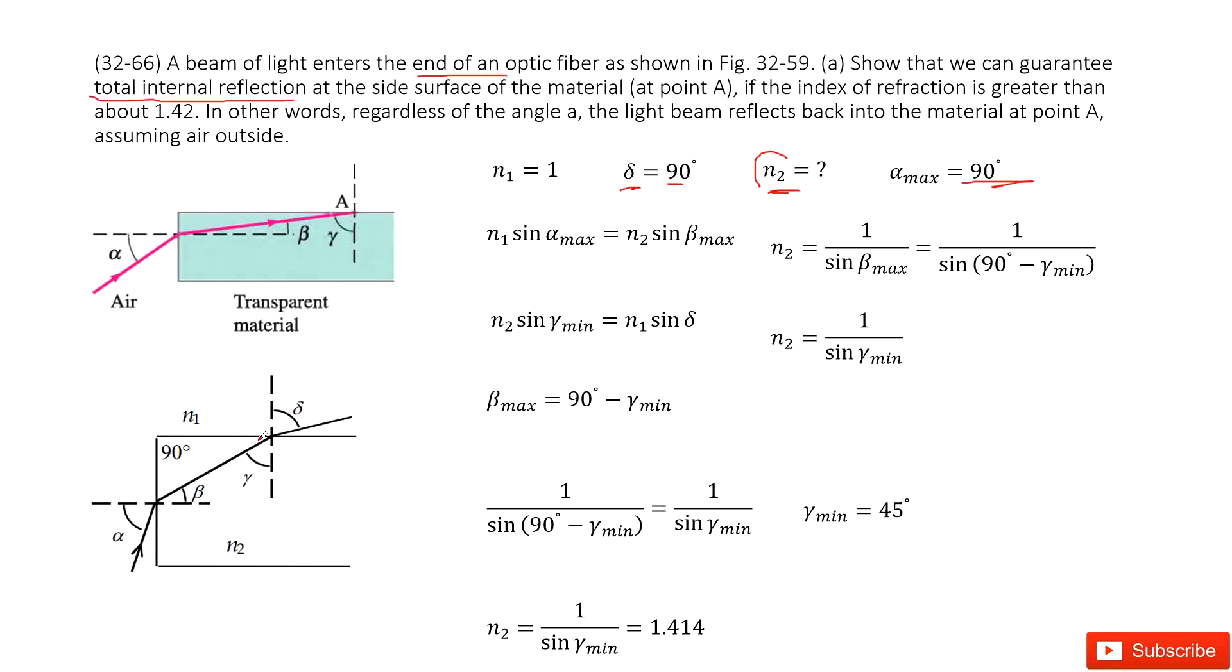So we look at this system. At this surface, the incident with n1 sin(alpha_max) equals n2 sin(beta_max). And at this surface, we can see n2 sin(gamma_min) equals n1 sin phi, right?